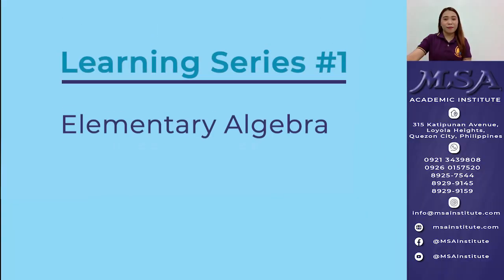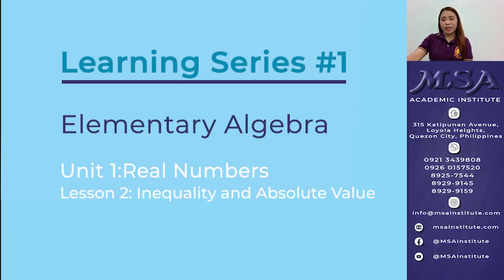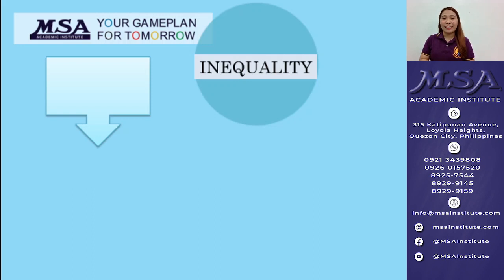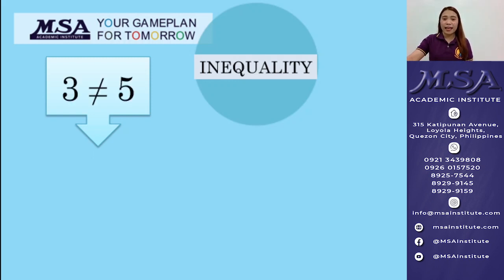Let's talk about inequality. A statement that the two numbers are not equal is called inequality. For example, we have 3 and 5. They are different numbers and they are not equal. So, we can write that inequality as 3 is not equal to 5.